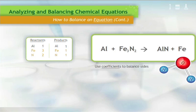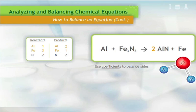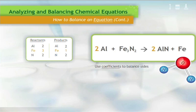Next, use coefficients to balance the sides, multiplying through the compounds. Start by balancing the nitrogen atoms by adding a coefficient to the right side. The nitrogen is now balanced. However, this threw the aluminum out of balance. Let us now balance that by placing a coefficient of 2 in front of aluminum on the left side. The aluminum and nitrogen are balanced, leaving only the iron unbalanced.